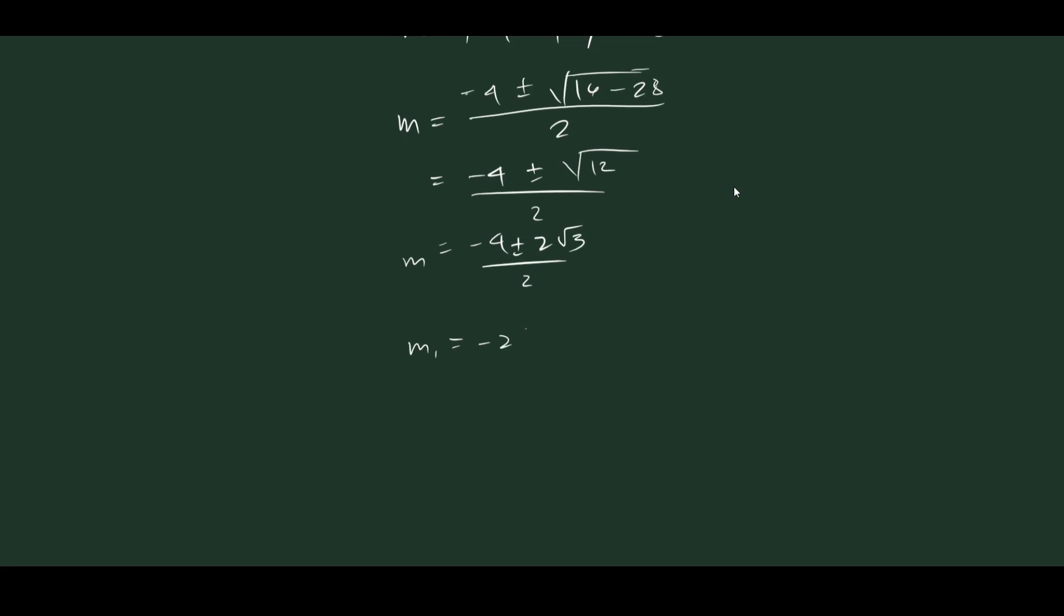So we will get m1 is equal to negative 2 plus square root of 3 and m2 is equal to negative 2 minus square root of 3. So here we have our two conjugate complex roots.